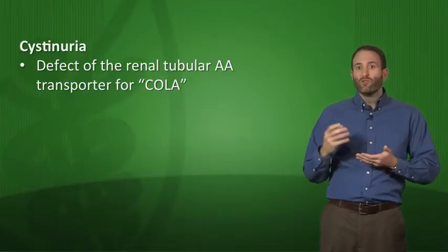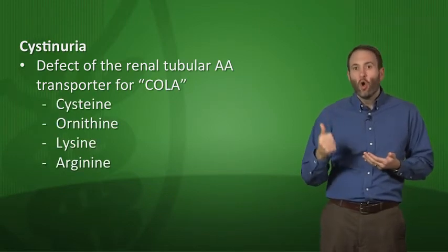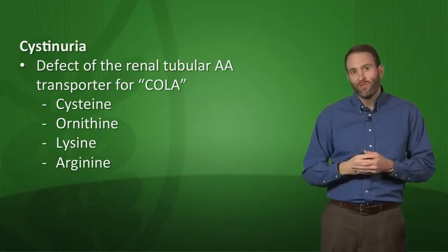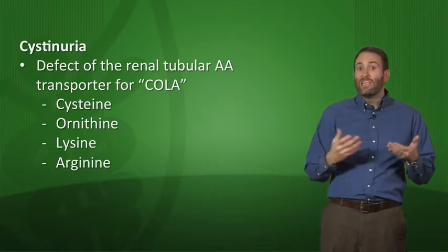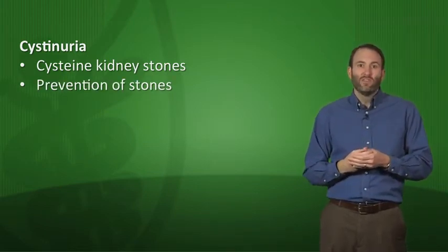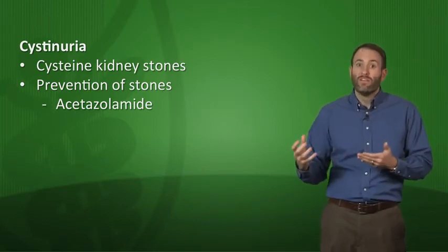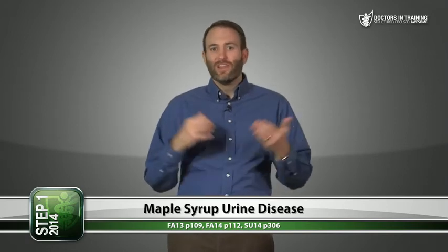Cystinuria is a defect of the renal tubular amino acid transporter for COLA — a mnemonic for Cysteine, Ornithine, Lysine, and Arginine. This transporter is normally in the proximal convoluted tubule. With cystinuria, cysteine builds up in the urine, leading to cysteine kidney stones. Treatment uses acetazolamide, a carbonic anhydrase inhibitor that alkalizes the urine to prevent stone formation.